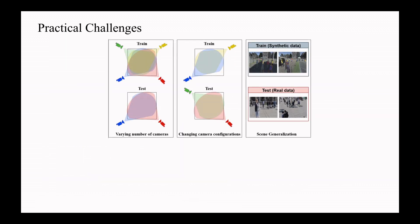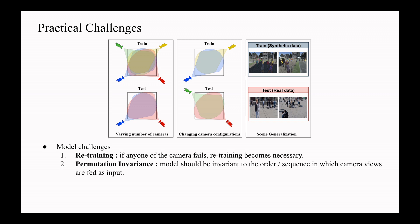Practical challenges which occur in above methods. Model challenges: retraining of the model is required when a model trained on four cameras is deployed in a scene and two of the cameras fail. Permutation invariance: the model should be invariant to the order or sequence in which cameras are fed as input.